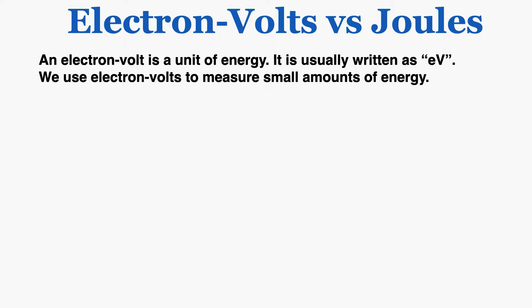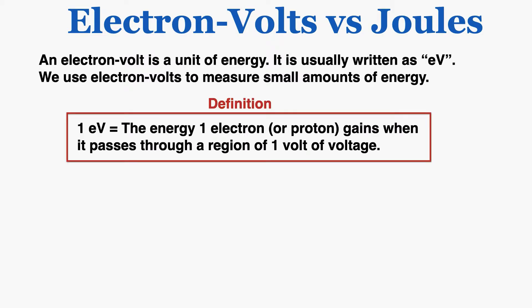Electron volts and joules measure the same thing, but they measure different quantities of that thing. Specifically, one electron volt is the exact amount of energy one electron or proton gains when it passes through a region of one volt of voltage. That's the definition of one electron volt — it's literally an electron moving through a volt, and when that happens you get exactly one electron volt of energy in the electron.